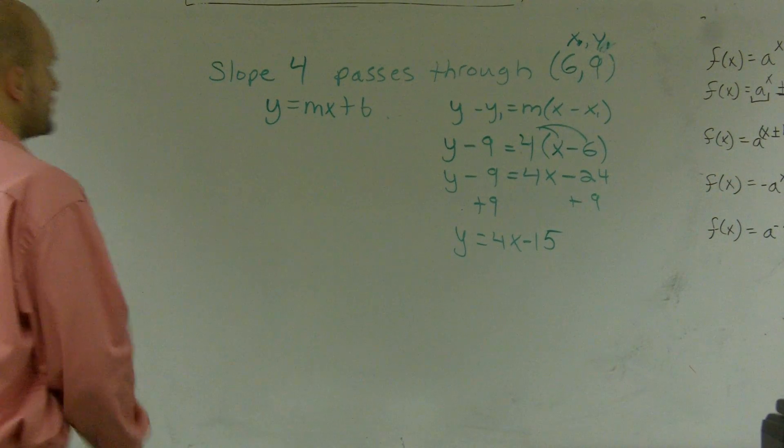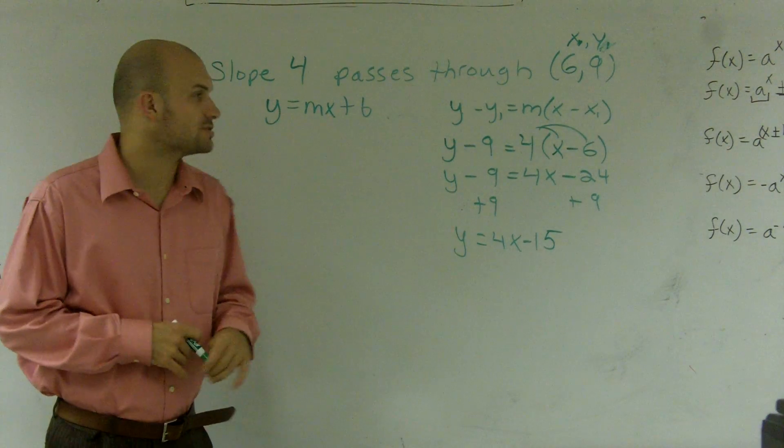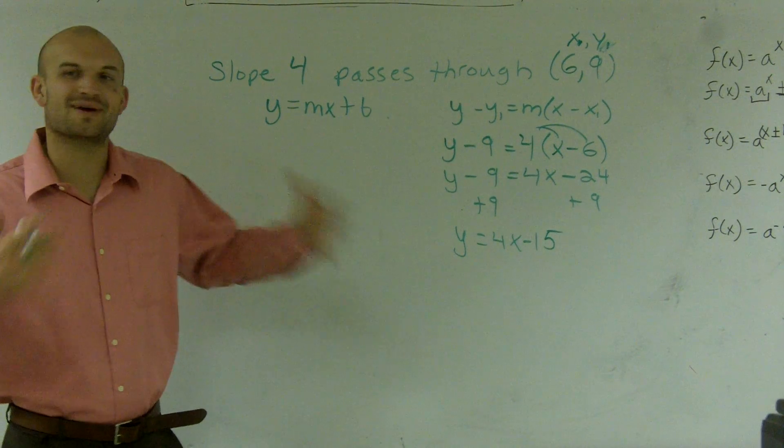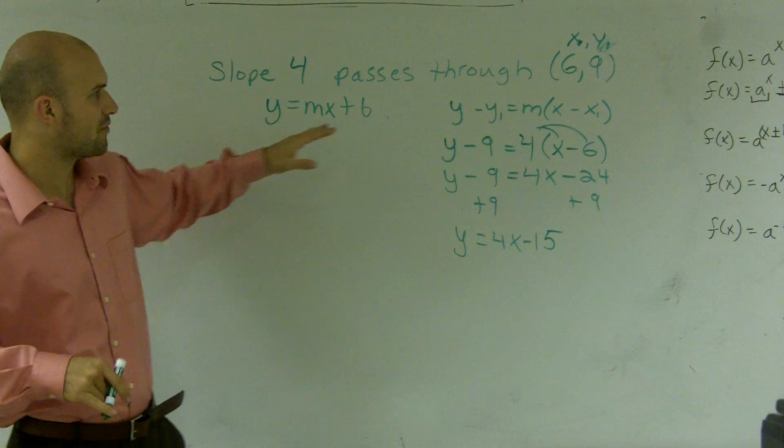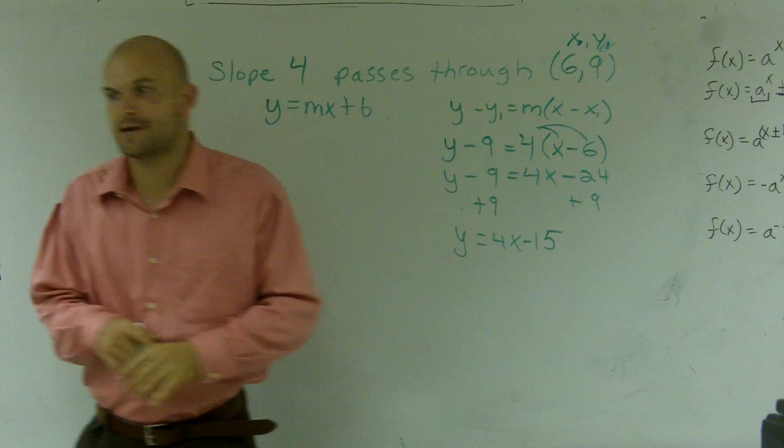All right. What I'm going to do is show you how to find the equation of a line with slope 4 that passes through the point (6, 9).